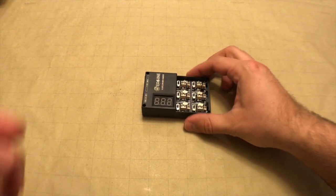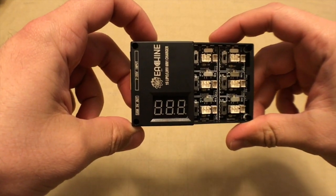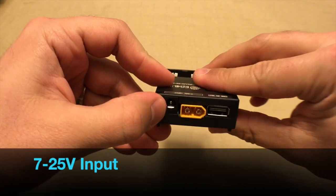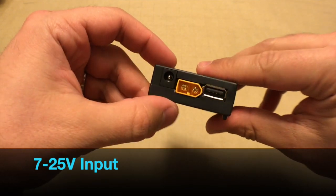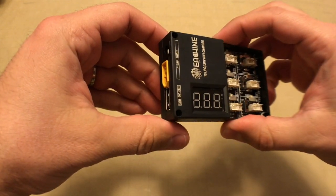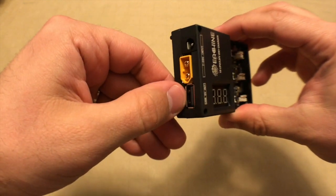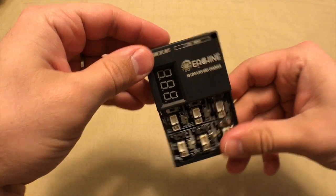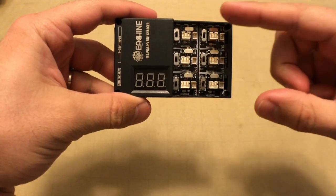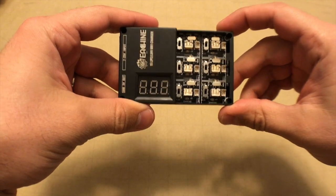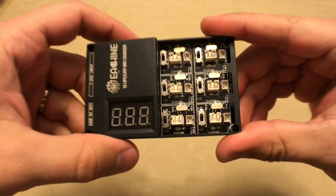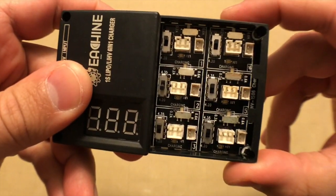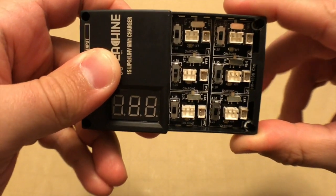The 6-in-1 Eachine 1S lipo charger is actually one that has quite a few features. As far as connection-wise, you can have the typical DC jack connection or an XT60 battery connection. The output here, this USB, is actually just a 5 volt output so you could charge your phone or something if you really wanted to. It has a display here on the front and it scrolls through and shows you the voltage on each one of the six ports. And if you look closely, each port has a switch for voltage, so it's either 4.35 or 4.2 volts, so it does do the high voltage charging.